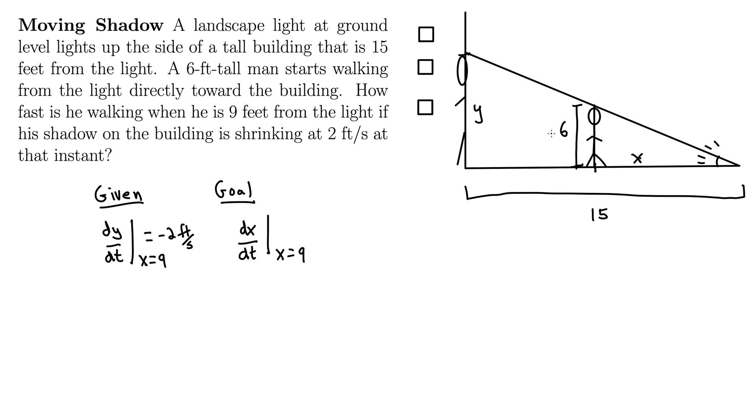So hopefully you're clear on what's happening here. This man is walking towards the building. As he walks towards the building, this shadow is going to get smaller and smaller. So when he's right up against the light, he would have essentially an infinite shadow on this building. And as he walks closer and closer to the building, that shadow is going to shrink. When he's right up at the building, the shadow is going to be exactly 6 feet tall, which is how tall he is. What someone has done is measured how fast his shadow is shrinking, and from that, we want to compute how fast he's walking.